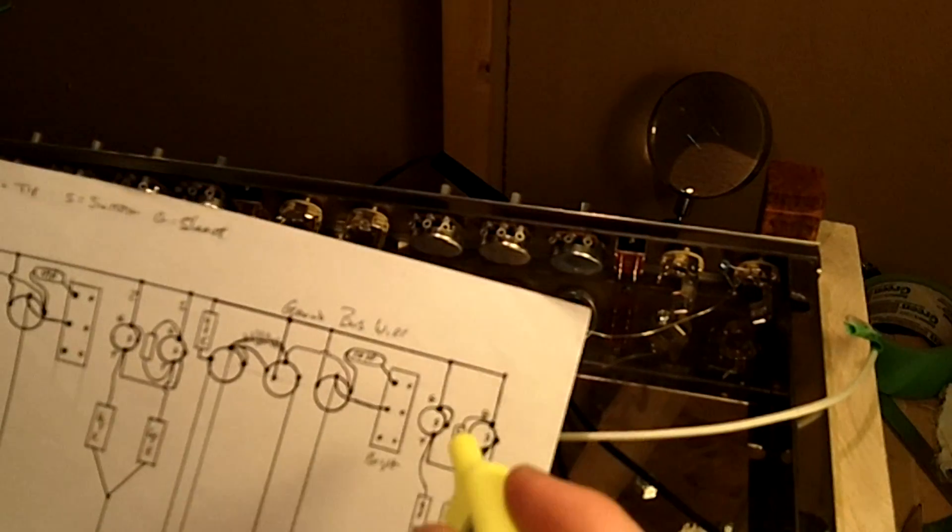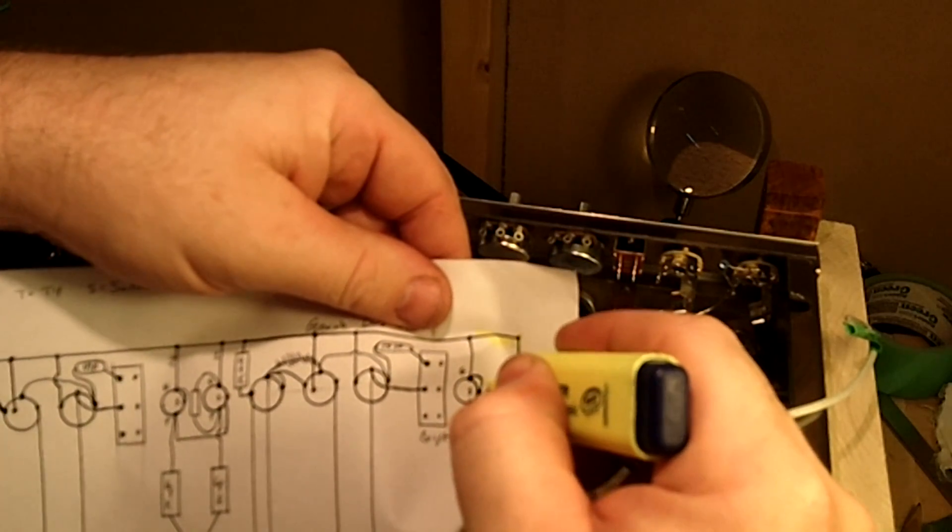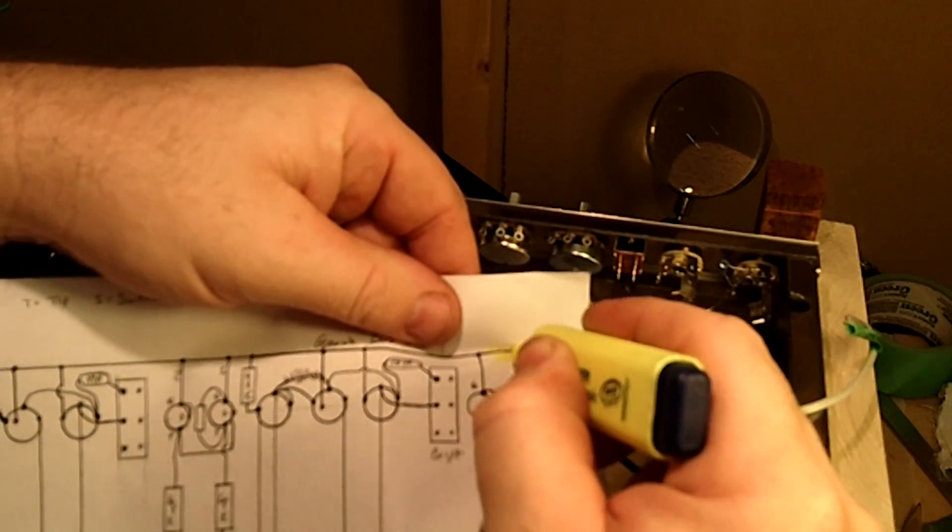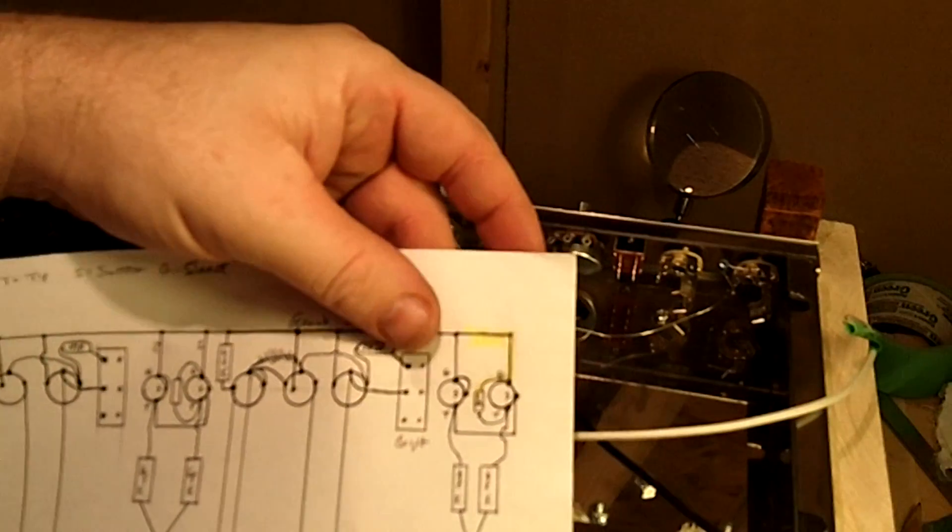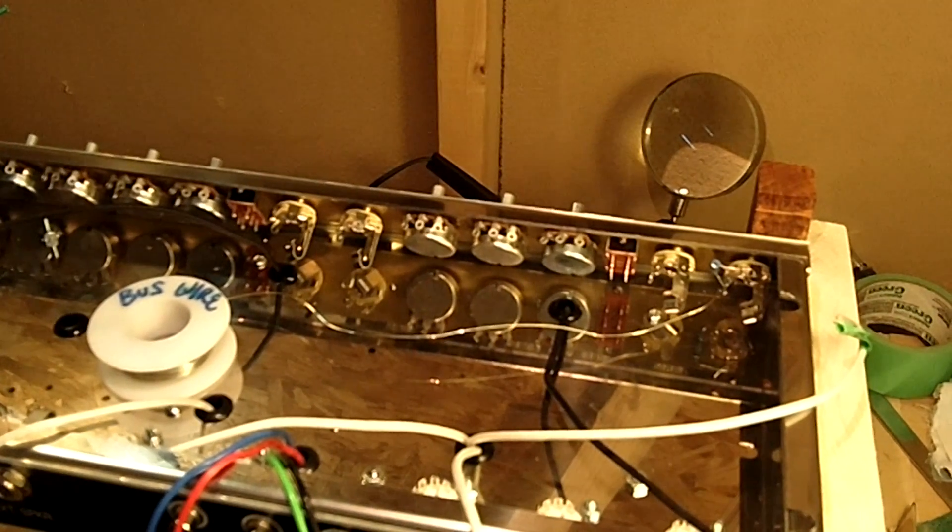Now this is a technique we're going to do throughout. Once we've made a connection, I'm going to go back to my plan and print out extra copies here and take a highlighter and highlight what you just soldered in place. And then you just keep going down the line.